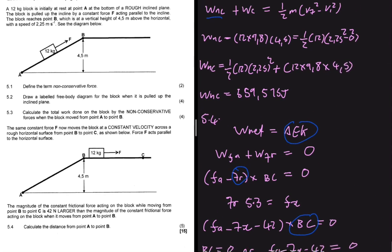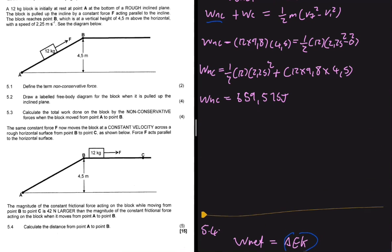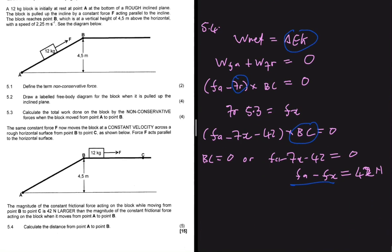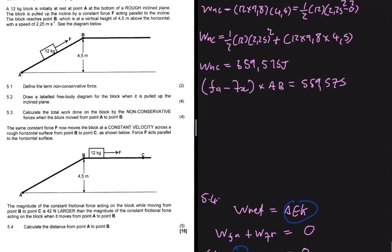Let's go back to 5.3 so that I can show you something. In 5.3 we ended up seeing that the work done by non-conservative forces is 559.575 joules. But which forces are we talking about when we say non-conservative forces? We're talking about the frictional force, which is F_x, and the applied force, which is F_a. So here we can change that and instead write force applied minus F_x, multiplied by delta x. Delta x is AB, multiplied by AB, equals 559.575 joules. But then here we say that F_a minus F_x is equals to 42, so we can just replace this. It's 42.